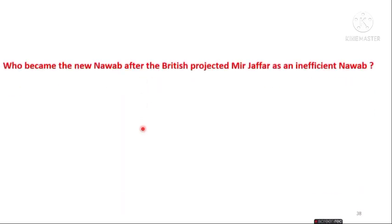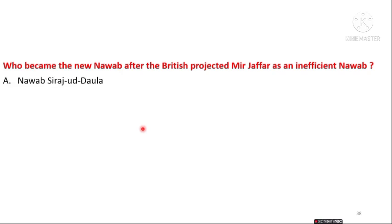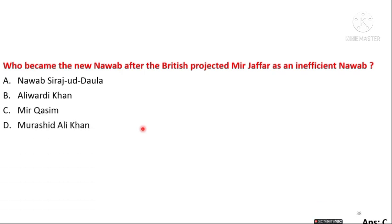The next question is: who became the new Nawab after the British projected Mir Jafar as an inefficient Nawab? The options are Nawab Siraj ud-Daulah, Aliwardi Khan, Mir Qasim, and Murshid Ali Khan. The answer is option C — Mir Qasim became the new Nawab after the British projected Mir Jafar as inefficient.